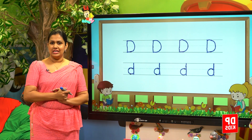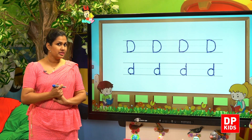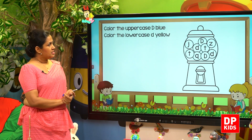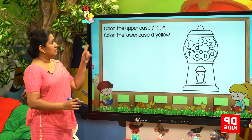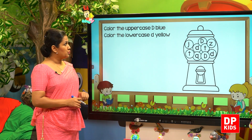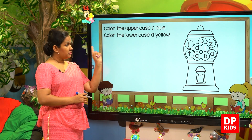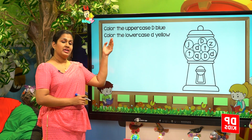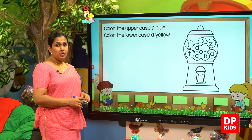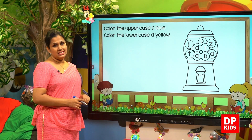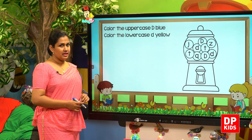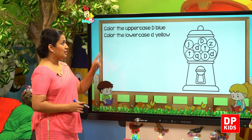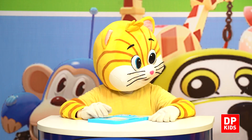Children, shall we do another activity? Yes. Look at the board. Colour the uppercase blue. Then colour the lowercase yellow. Capital D we colour in blue. Simple D we colour in yellow. Blue, yellow. First, select capital D.